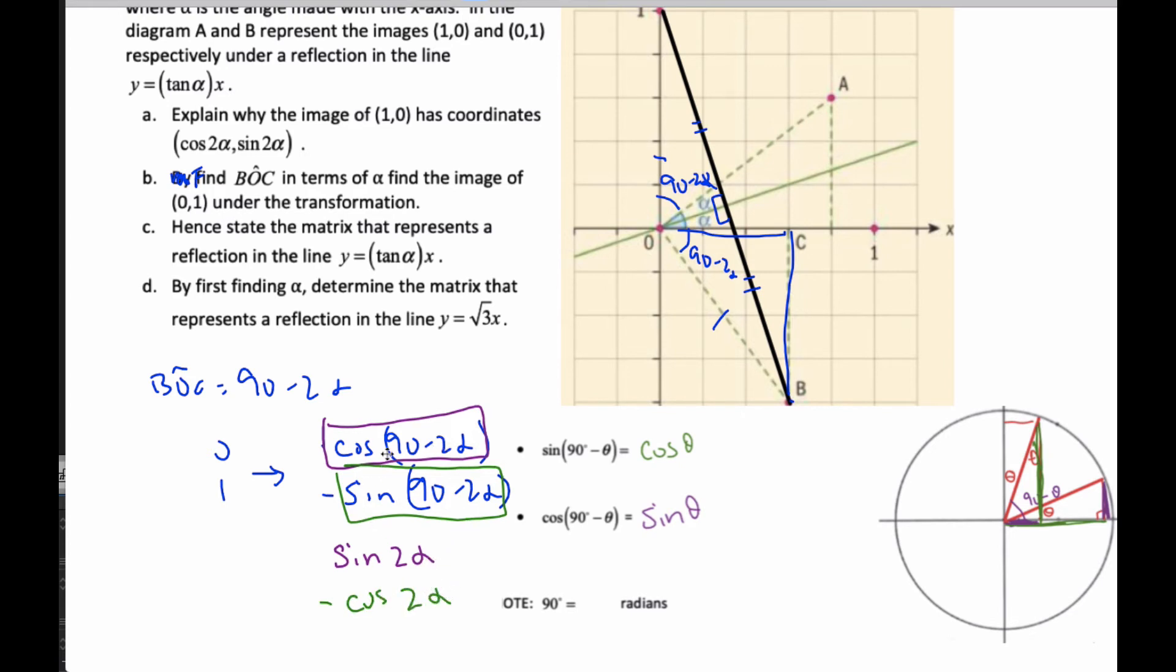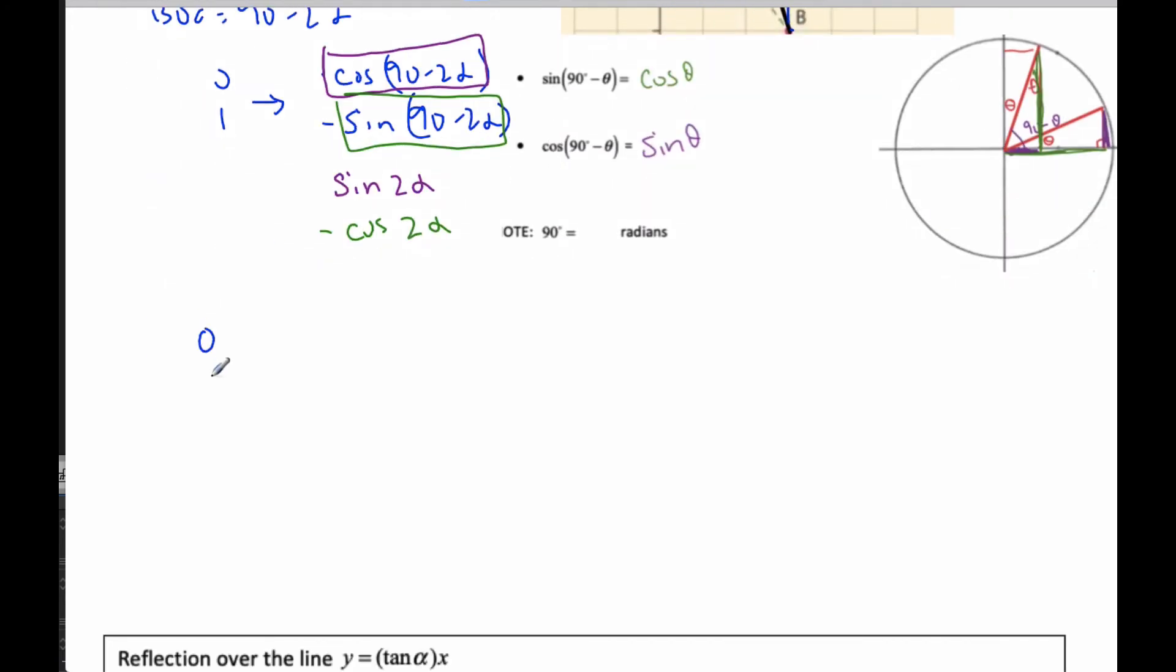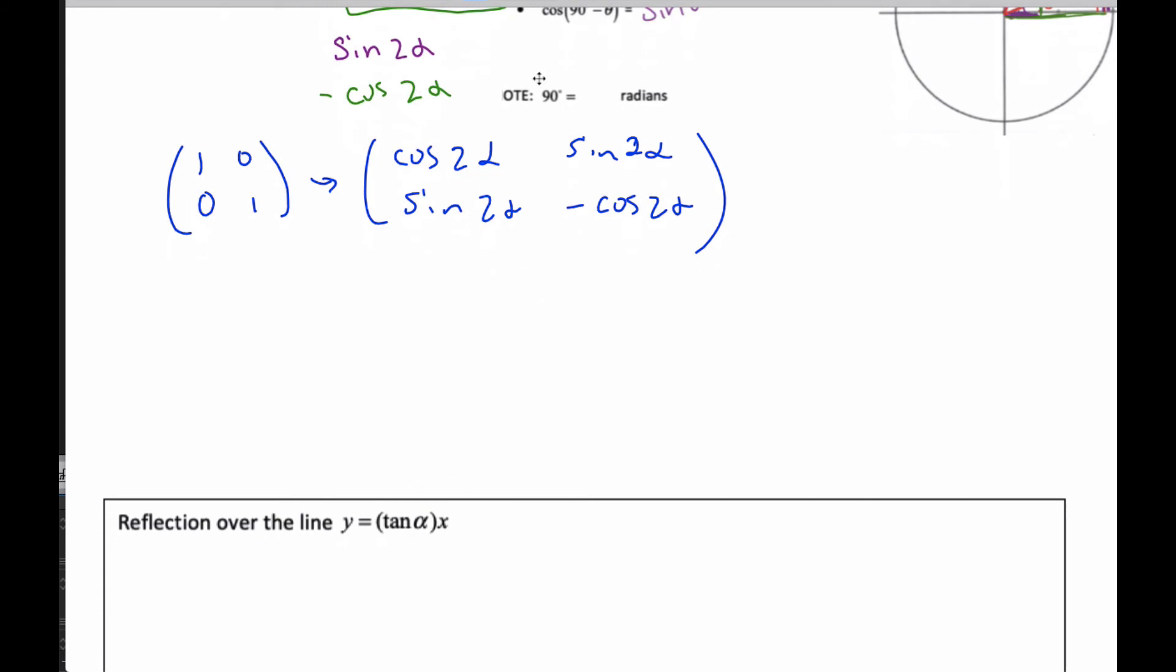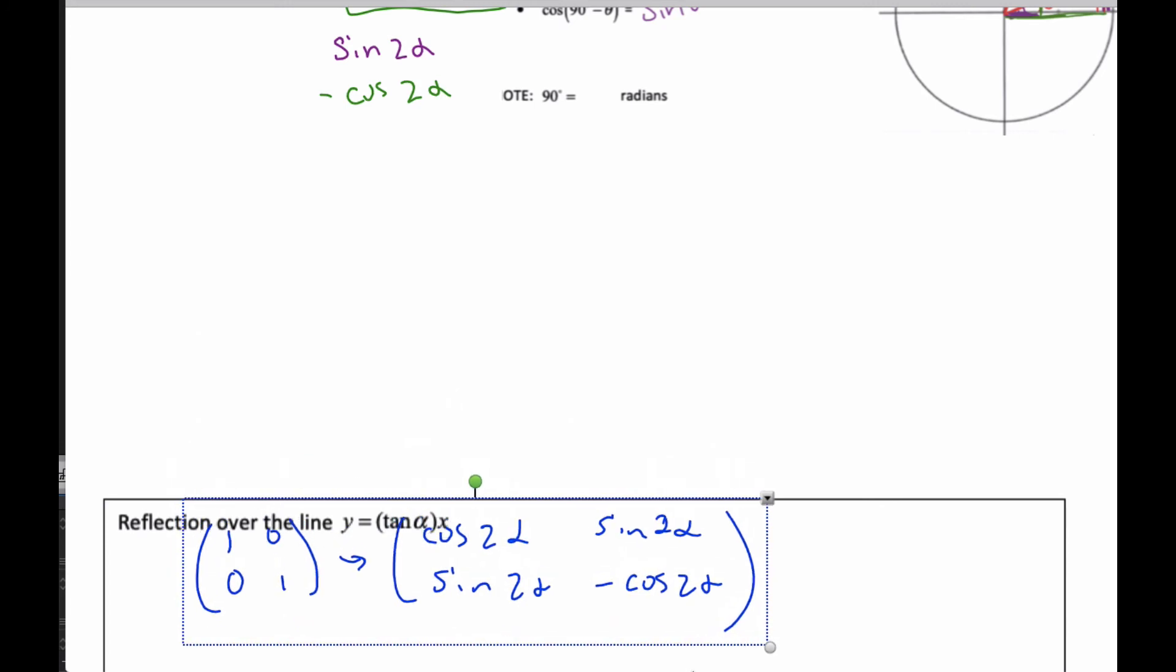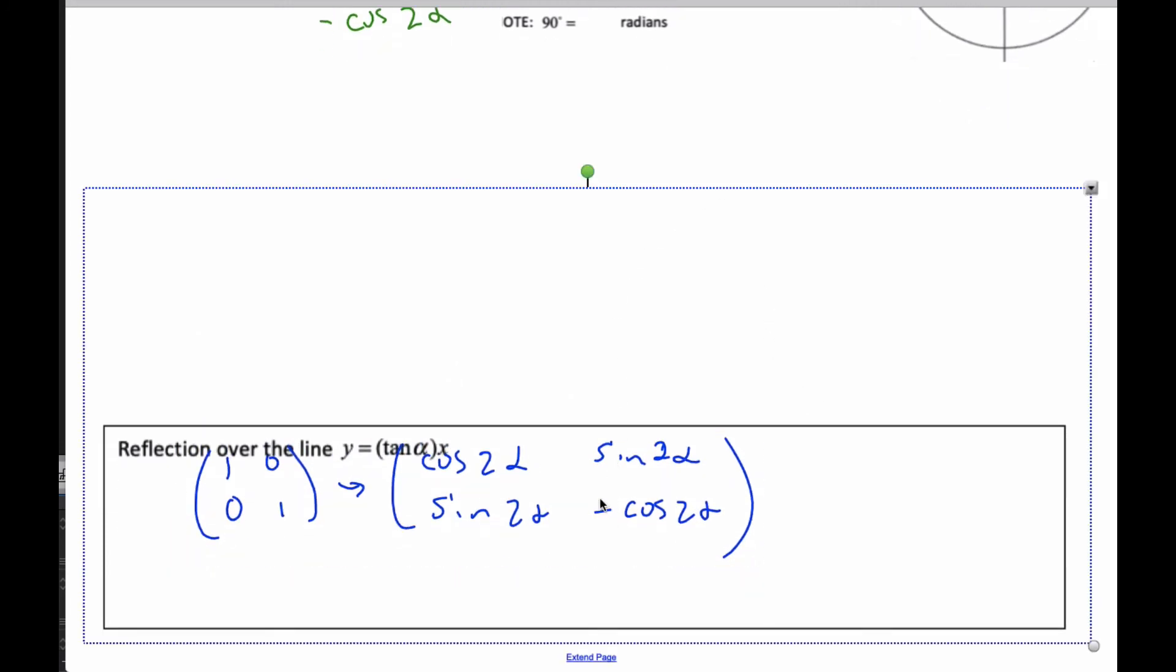And so if I put this together, I can make a matrix now that uses this. I know that (0,1) and (0,1) will change to cos 2 alpha, sine 2 alpha, and it's going to be sine 2 alpha, negative cosine 2 alpha. And that is a generalization of a reflection over this line here. This is going to be a true fact for this scenario here. The good news is it is also in your formula booklet.